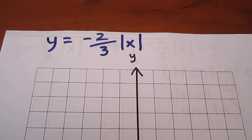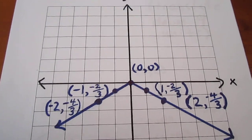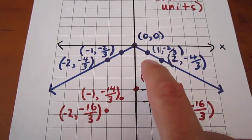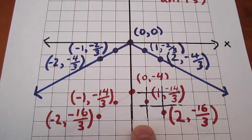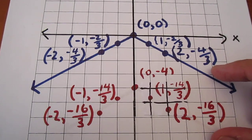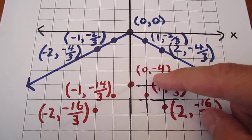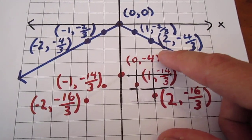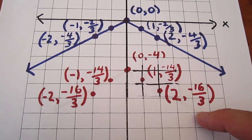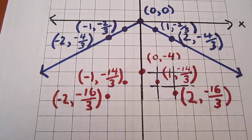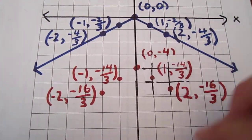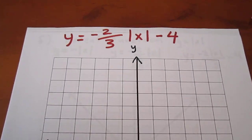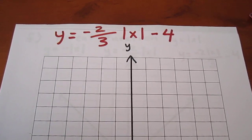We're now two transformations in to our three transformation problem. The last transformation that occurs is a translation down four units. We're going to take each one of these coordinate points on the blue curve and move each one down four units, affecting each y coordinate. So 0, 0 becomes 0, negative 4. The point 1, negative 2 thirds becomes 1, negative 14 thirds. And 2, negative 4 thirds becomes 2, negative 16 thirds. Some facility with fractions is quite beneficial here. We now discard the blue curve entirely and focus on the red — that is our final curve: y equals negative 2 thirds times the absolute value of x, minus 4.